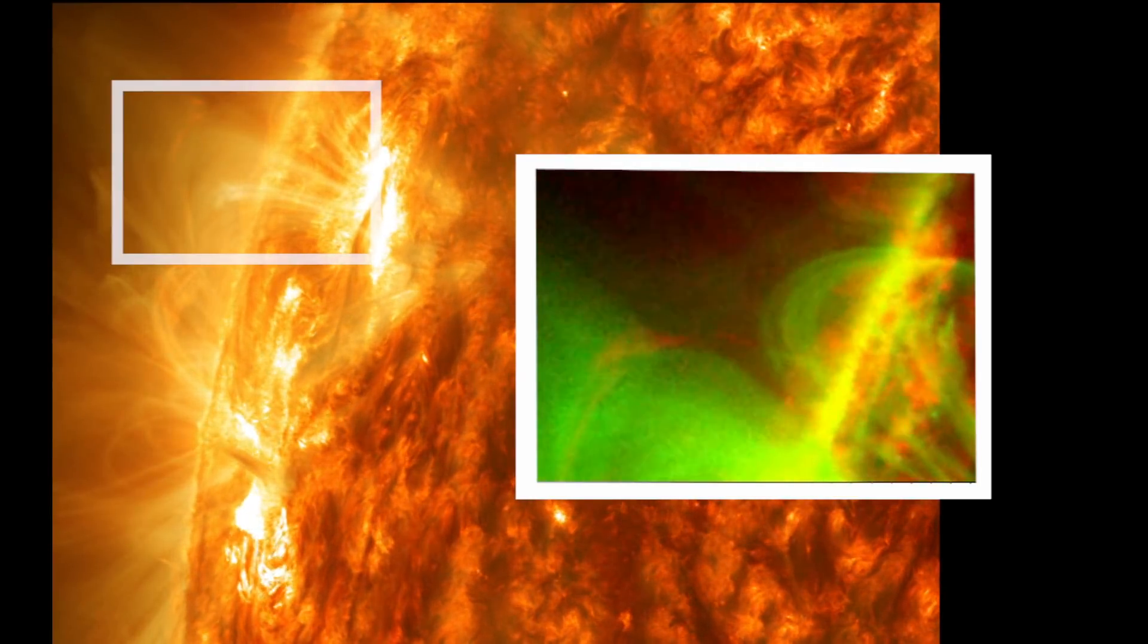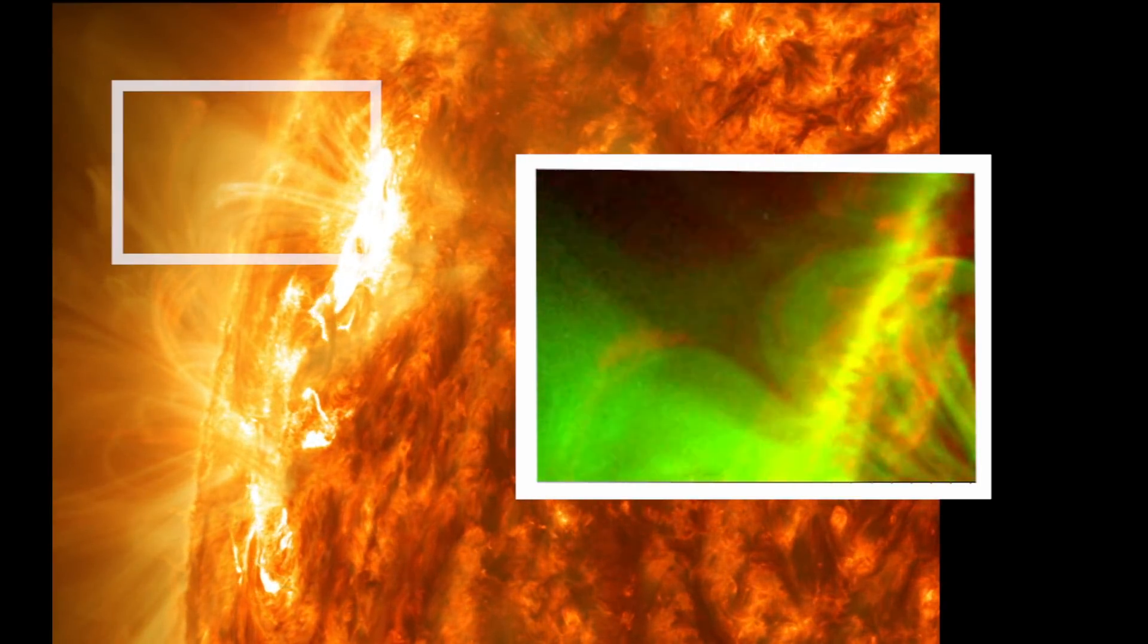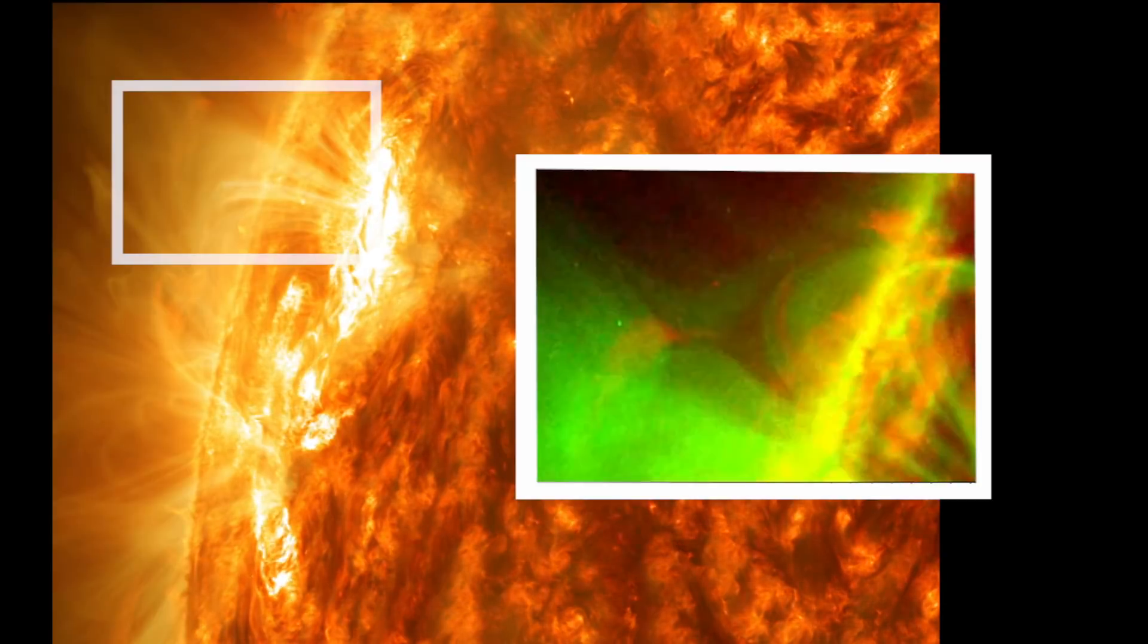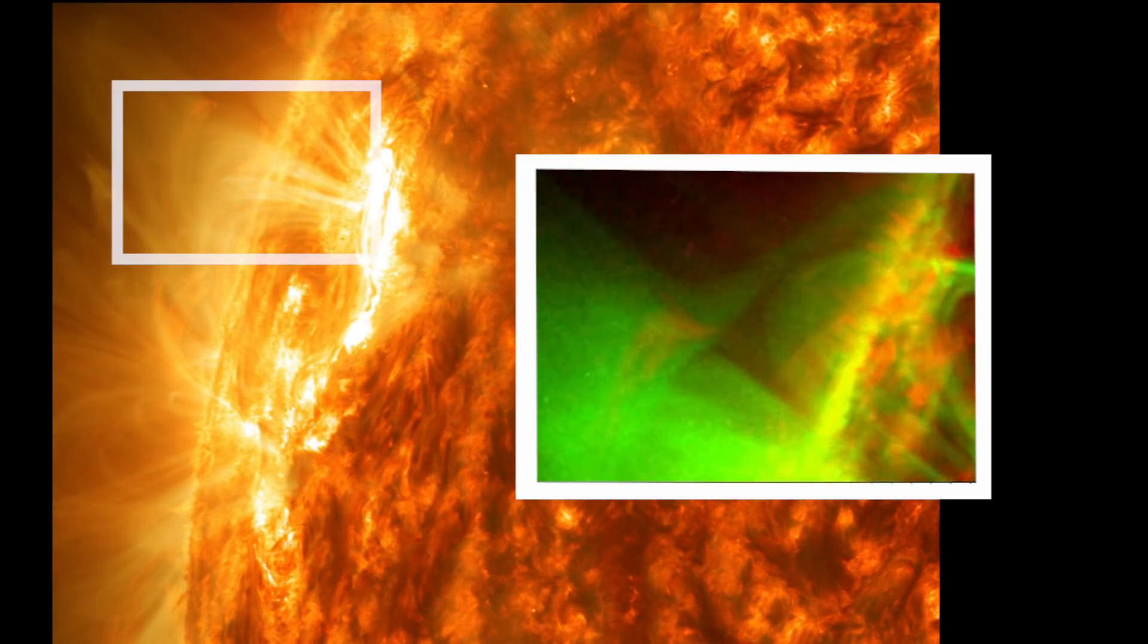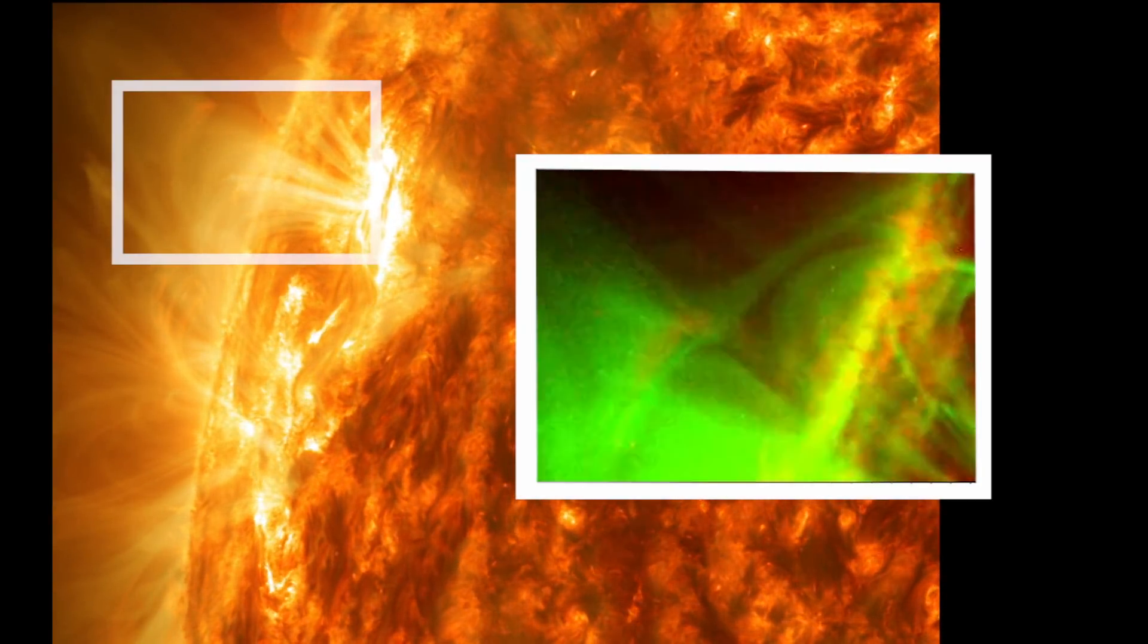The forced reconnection event was clearly visible when scientists used observations from NASA's Solar Dynamics Observatory to look at a wavelength of light showing plasma heated to 6 million degrees.